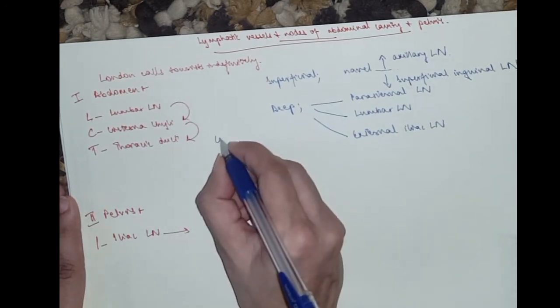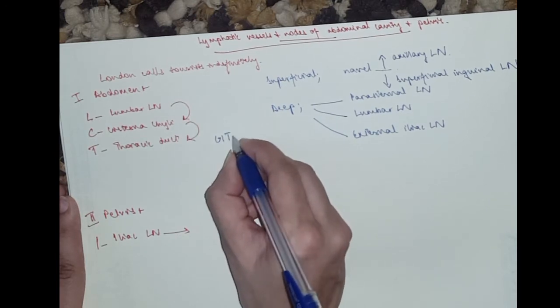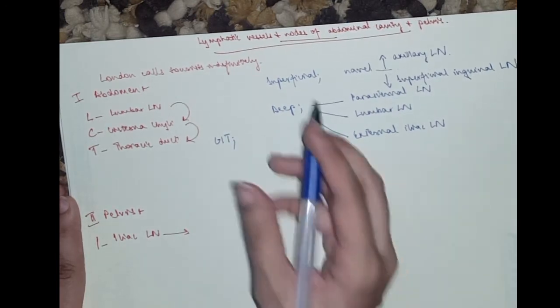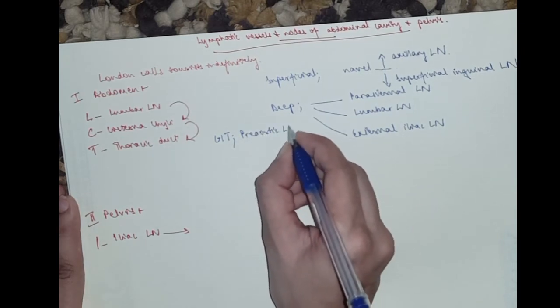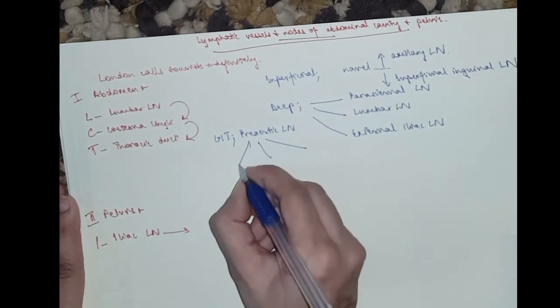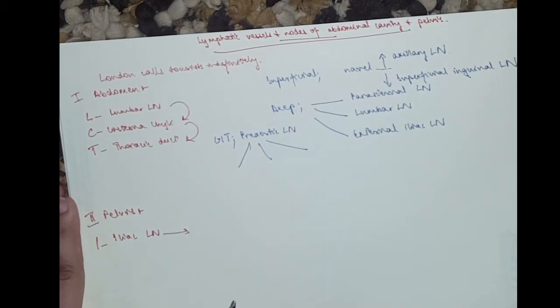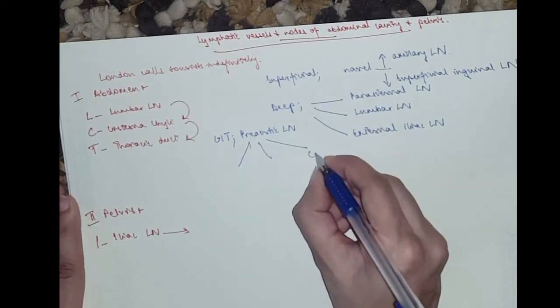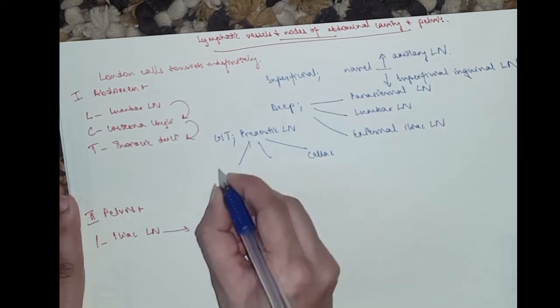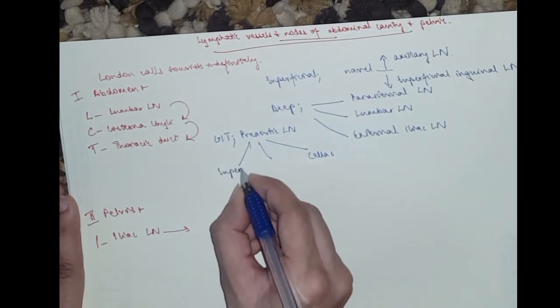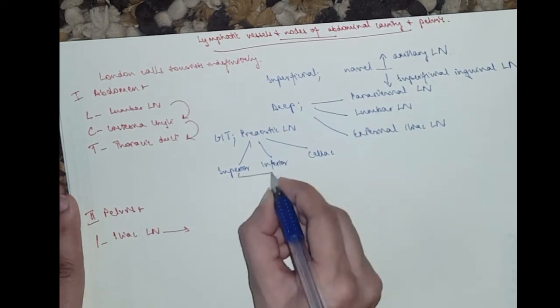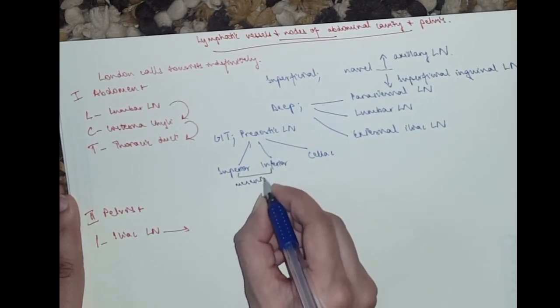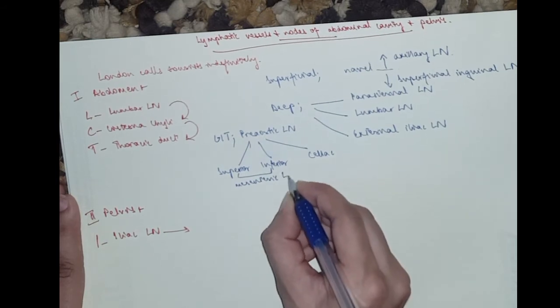Then from the gastrointestinal tract, the organs, where do they go? They go to the pre-aortic lymph nodes. If you watched my sympathetic nervous system video, it will be easy for you to remember. We have celiac, superior and inferior mesenteric lymph nodes.